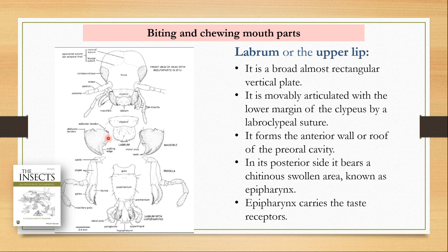The labrum is articulated with the lower margin of the clypeus by a labral-clypeal suture. On its posterior side, the side that faces the mouth, it has a chitinous swollen area known as the epipharynx. The epipharynx carries taste receptors, which help the labrum in testing the food before the insect bites into it. Here in this grasshopper you can see the labrum very clearly.